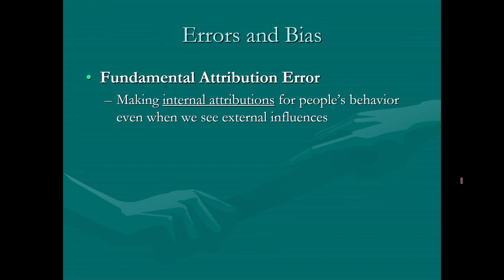Psychologists believe the fundamental attribution error happens a lot because, number one, our culture really focuses on individual accomplishments — the way our country and culture is designed emphasizes the individual being unique. And secondly, as humans, we often have a hard time believing that we could be influenced by situational factors; we don't want to accept that. So we often look for individual explanations. When the fundamental attribution error is in play, we go with the internal card — we say it's something about that person's personality — and we ignore external factors that could explain the behavior.